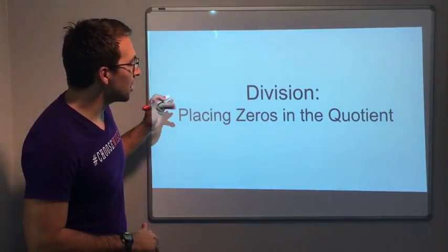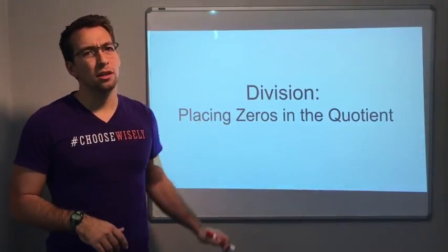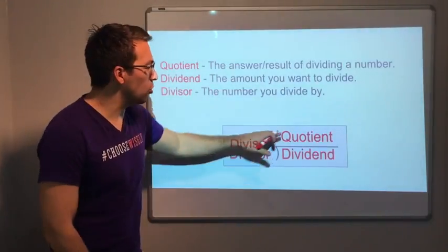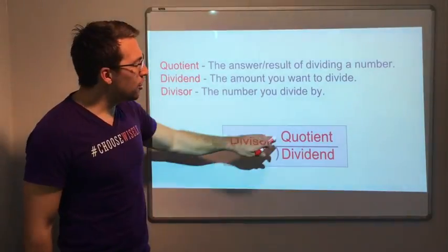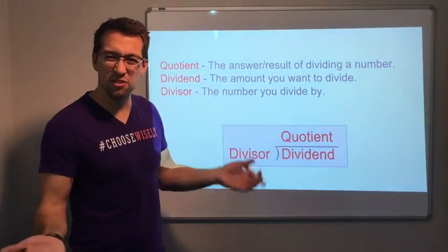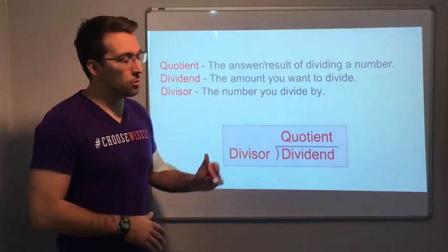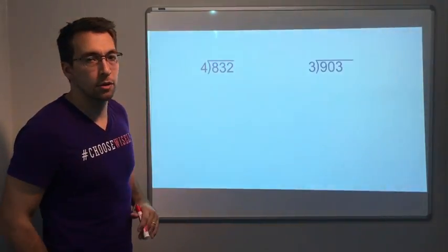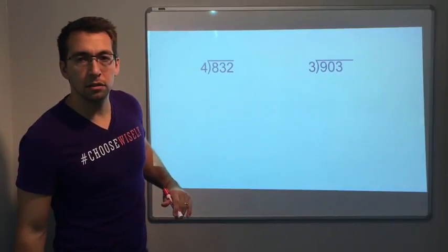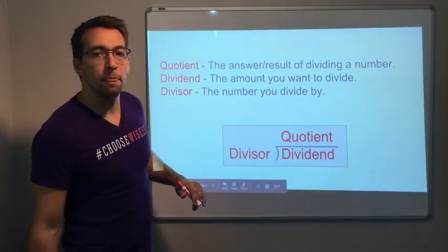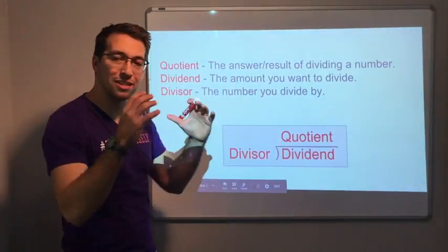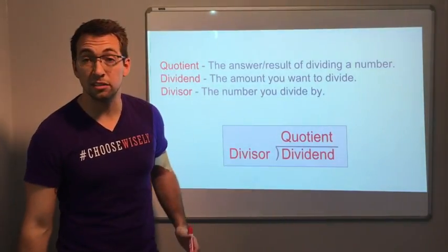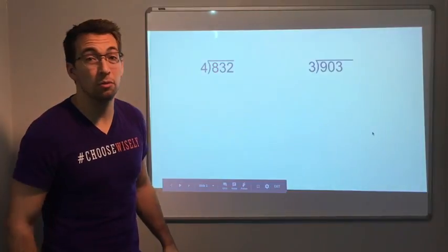Hello again. Today we're talking about placing zeros in the quotient. Let's look at the vocabulary. The quotient is our answer. Our dividend is what we're dividing, the divisor is what we divide it by, and then the quotient is our answer — just a quick reminder.